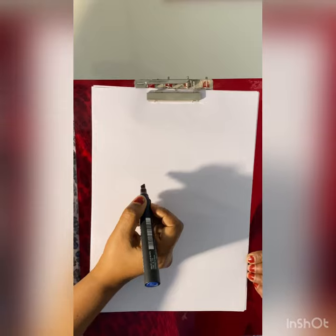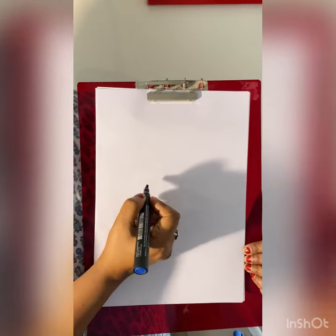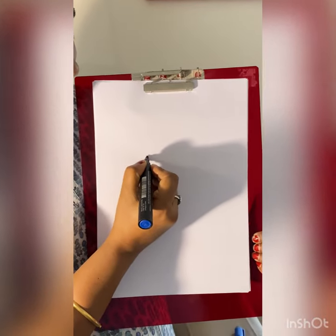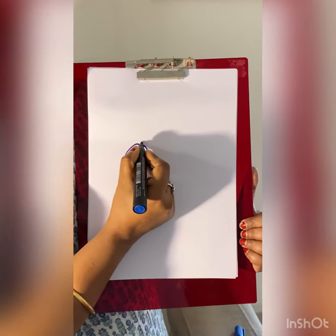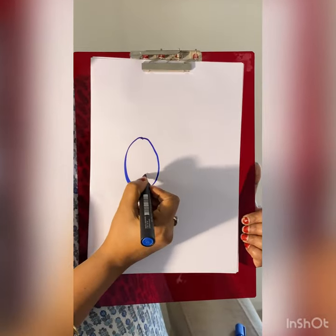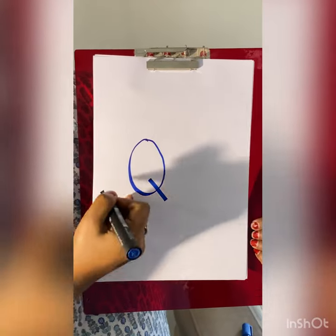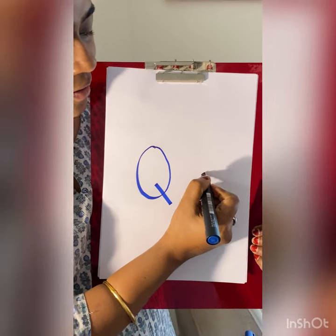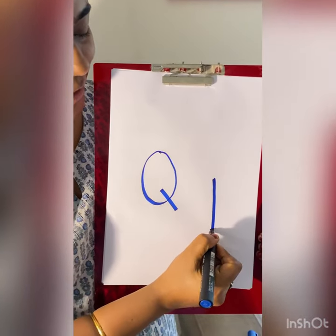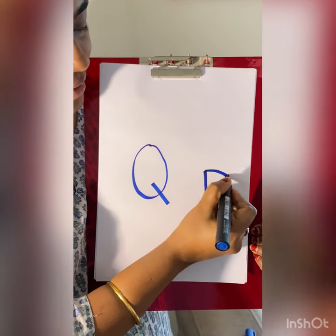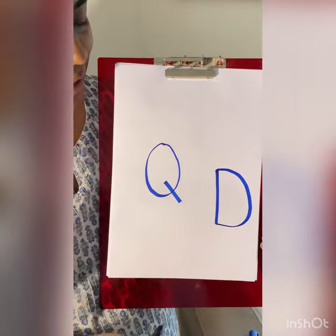Now let's see how we write letter Q and letter D. We already know how to write letter O — we write O, and then a small cut makes letter Q.